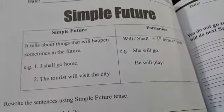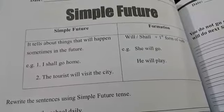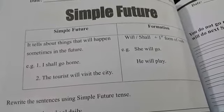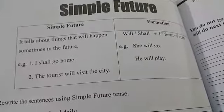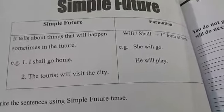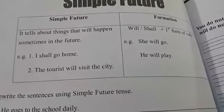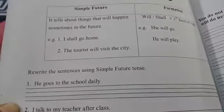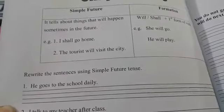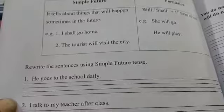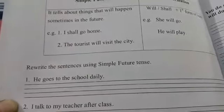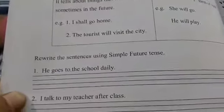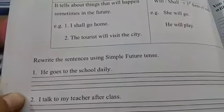The formation is: shall plus first form of the verb. For example, 'She will go,' 'He will play.' We use 'will' generally, and 'shall' is used with I and we. The use of 'shall' is now very limited.